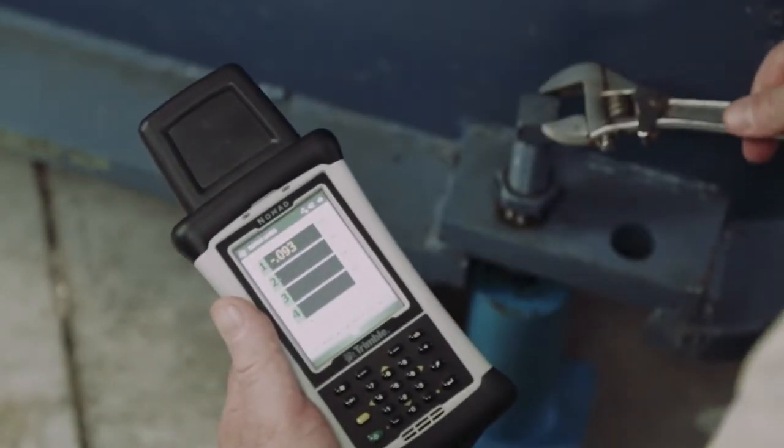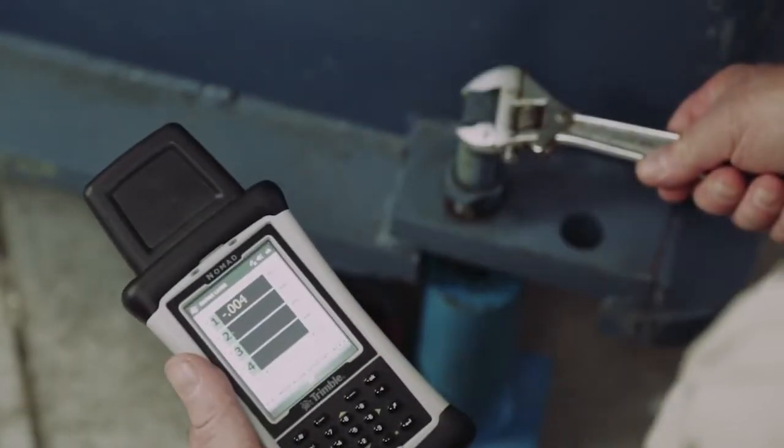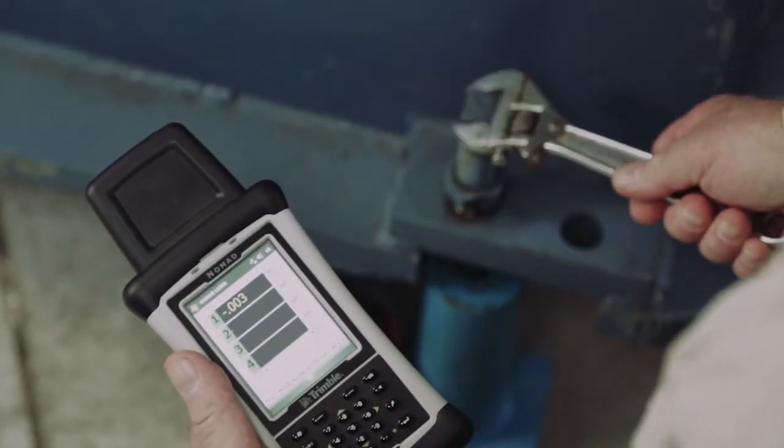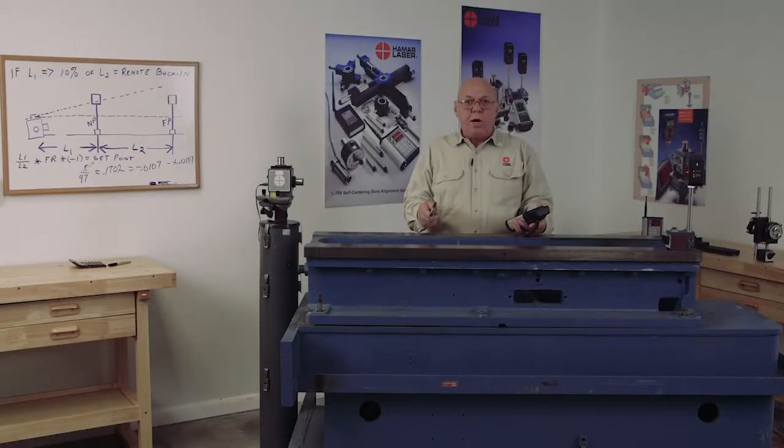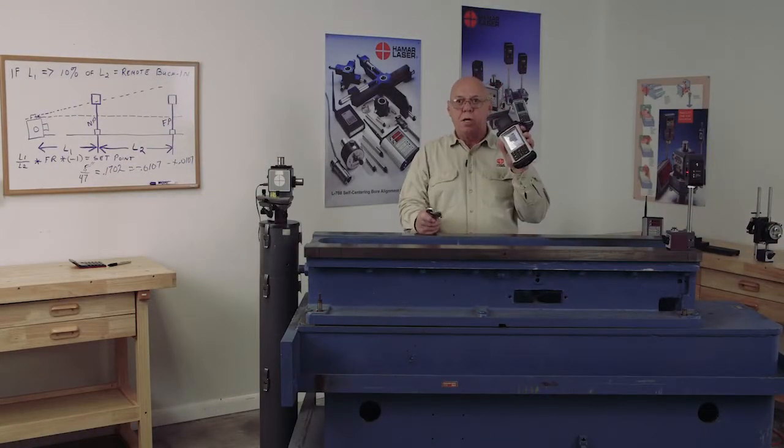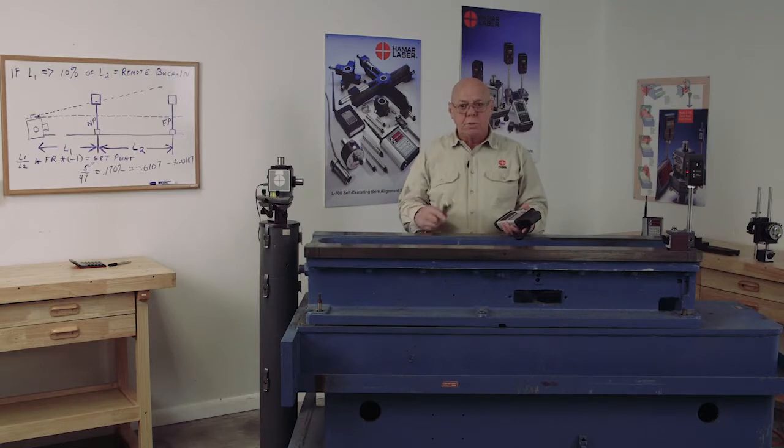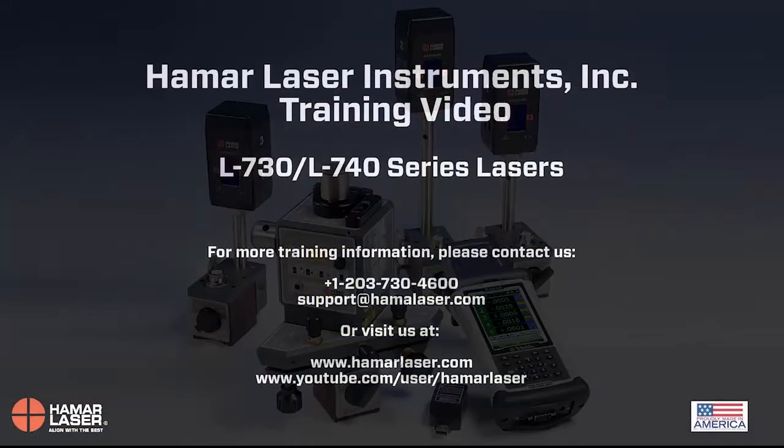I have live readings on the readout. So as I'm adjusting, I watch the numbers, bring it right to zero. So over each leveling point, I make the adjustment, watch the numbers on the readout until it comes to zero. That's how I level the machine.